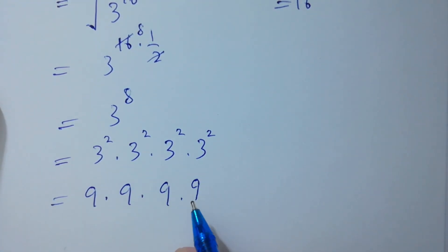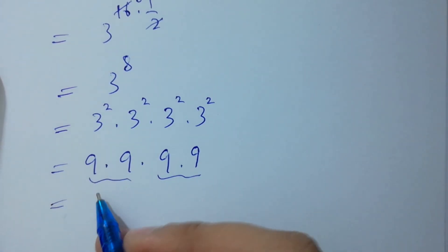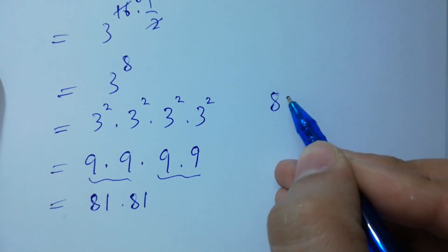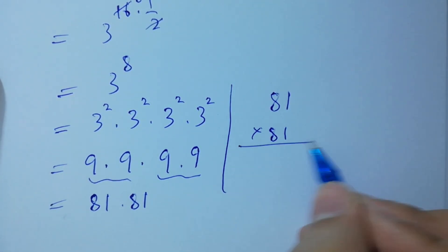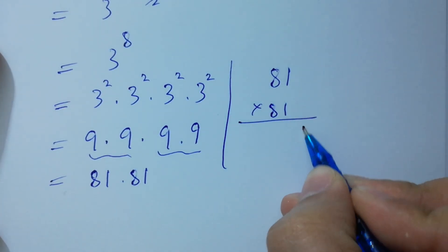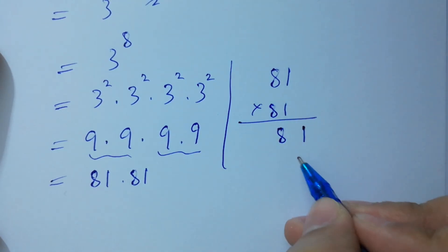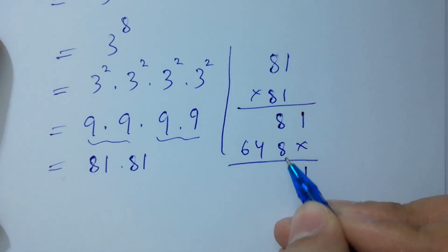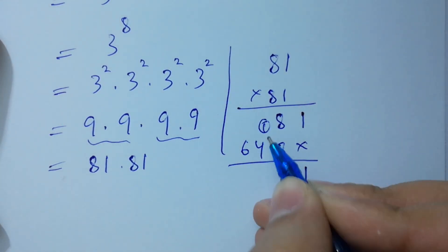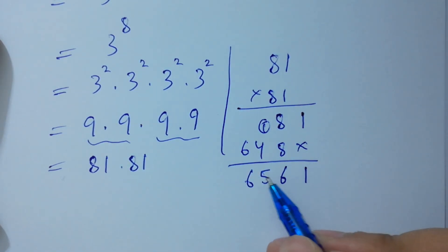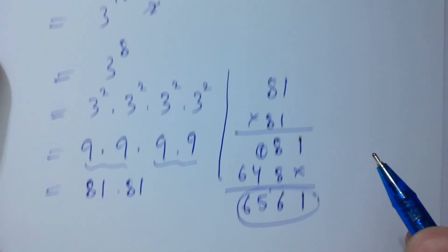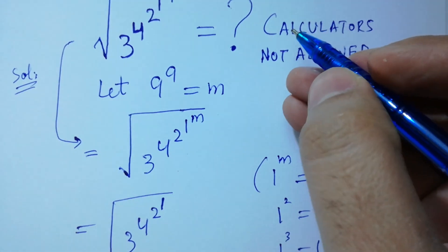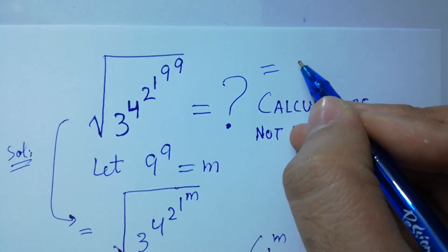So we multiply 9 × 9 × 9 × 9 = 81 × 81. Multiplying: 1 × 1 = 1; 1 × 8 = 8; 8 × 1 = 8; 8 × 8 = 64. We get 1, then 8 plus 8 is 16 — write 6, carry 1; 4 plus 1 is 5; and 6 as it is. So the result is 6561. Therefore, the scale root of 3 to the power 4 to the power 2 to the power 1 to the power 9 to the power 9 equals 6561.